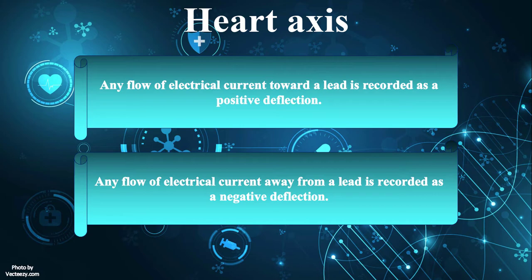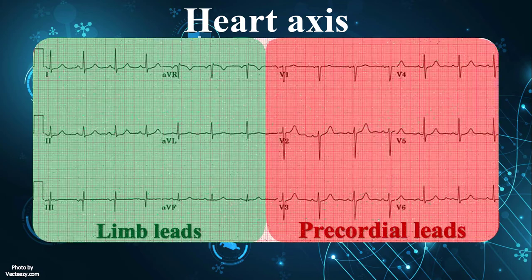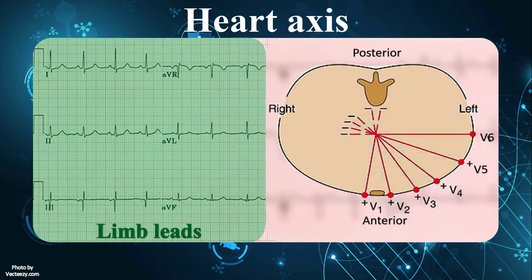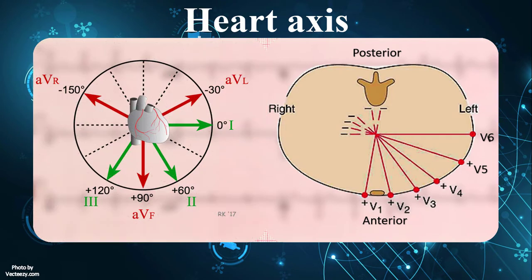Every standard electrocardiogram contains 12 leads arranged in two separate planes. The six precordial leads view the heart in the horizontal plane, while the six limb leads view the heart in the vertical plane.